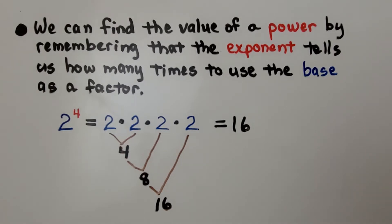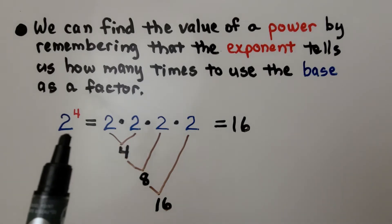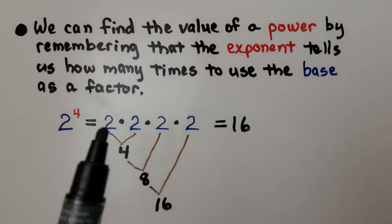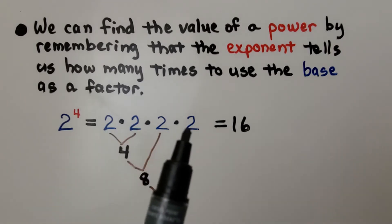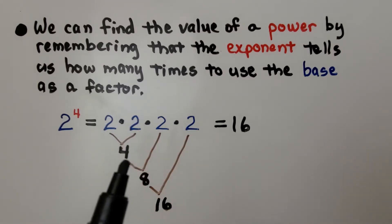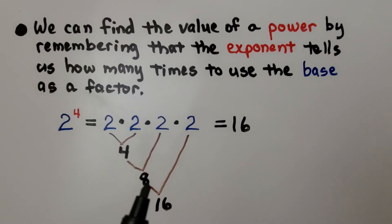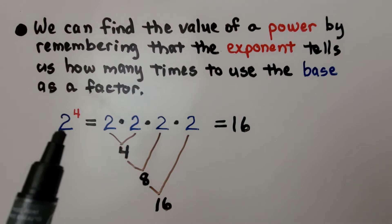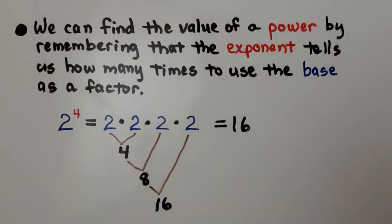We can find the value of a power by remembering that the exponent tells us how many times to use the base as a factor. If we have 2 raised to the fourth power, we're going to use the base 2 four times as a factor. 2 times 2 is 4, and 4 times 2 is 8, and 8 times 2 is 16. So 2 raised to the fourth power is equal to 16.